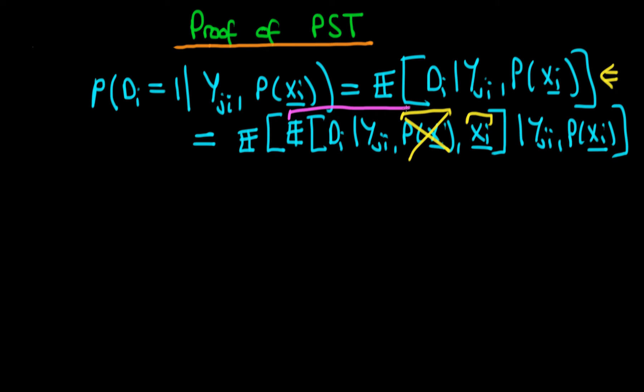But this inner expectation is that which we encountered when we were talking about the conditional independence assumption. Remember that we are proving the propensity score theorem under the assumption that the conditional independence assumption holds. What the conditional independence assumption says is that conditional on xi, which is that which we have here, di is independent of yji. So what that means is that we can remove yji.